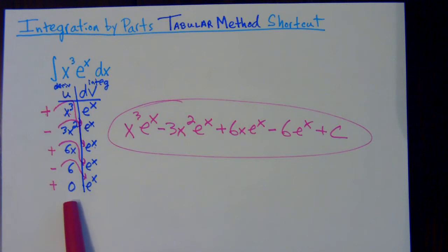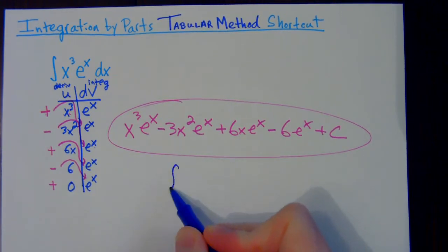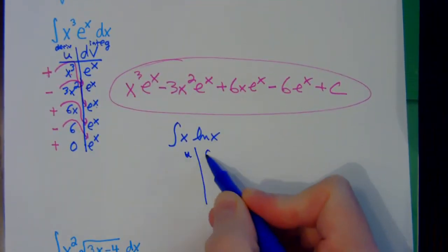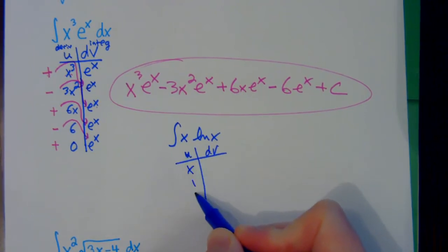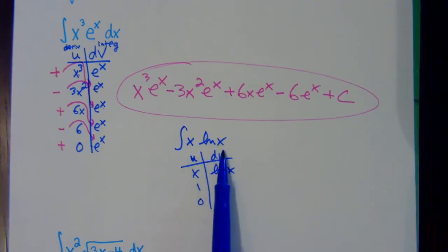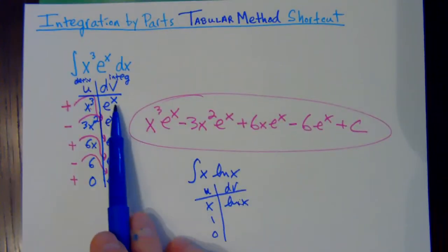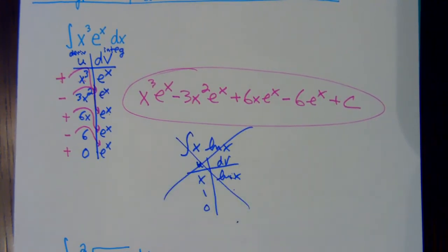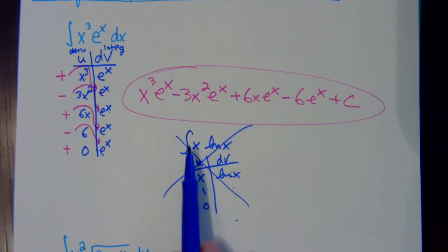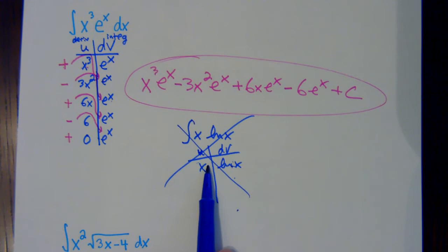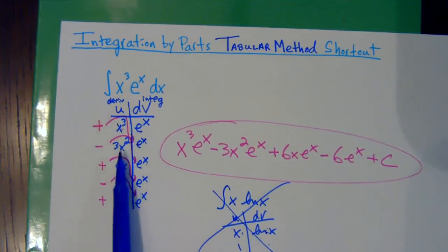You can only use the shortcut if the u part actually goes down to zero. If your u is something where that derivative won't go to zero, you cannot use the shortcut. For example, if you have x times ln of x, you can't set up the chart and take the derivative down to zero — because you can't let the dv be the ln of x part. You can't integrate ln of x the way you can e to the x. Sometimes with crazy fractions, radicals, arc trig functions, or trig functions, you can't always use the shortcut.